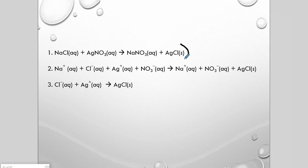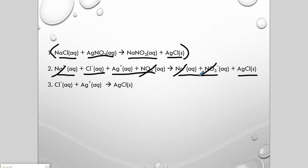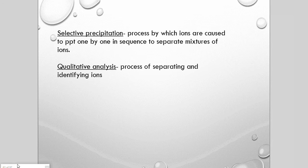Here's an example: we go from the classic molecular equation, then ionize all ionizable parts — sodium chloride, silver nitrate, and on the product side sodium nitrate and the solid precipitate silver chloride. Certain ions appear on both sides and cancel, so they're removed from the net equation. The net ionic equation is simply: Ag⁺ + Cl⁻ → AgCl(s). There's another example in your notes.